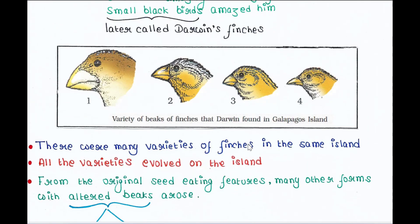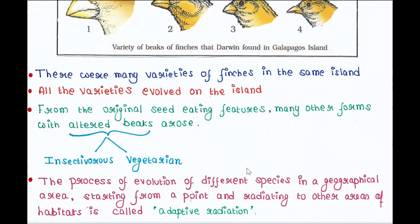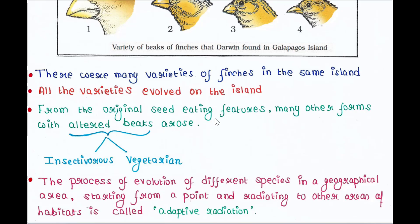He realized that there were many varieties of finches on the same island. All the varieties evolved on the island itself. Originally there were some seed-eating birds, but at a certain point of time they faced food scarcity. At that time, many other forms with altered beaks arose.